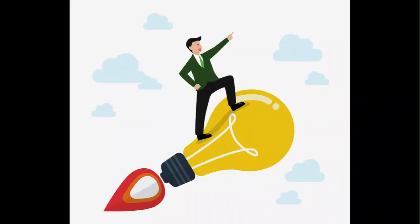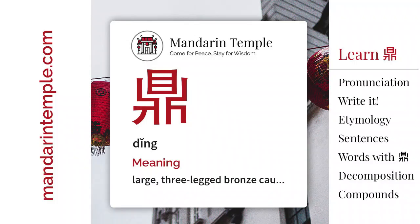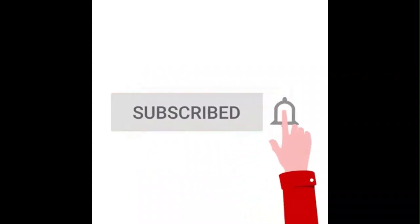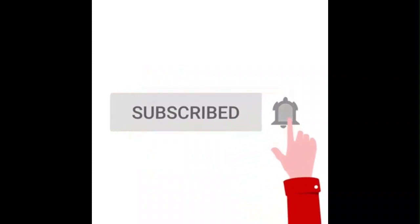So there you have it, now you know the character for cauldron in Chinese. Congratulations on building up your fundamental Chinese vocabulary. Please subscribe and stay tuned for more Chinese lessons.